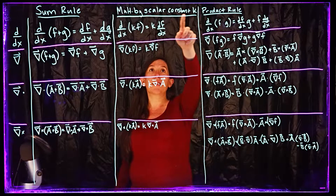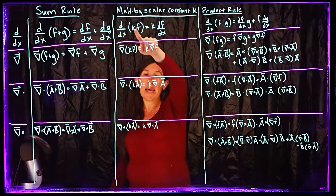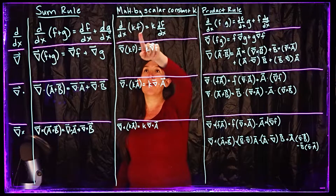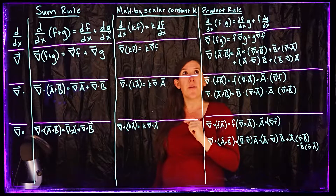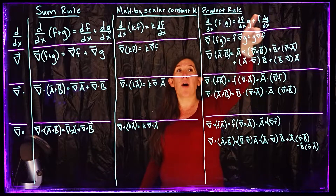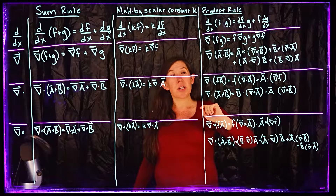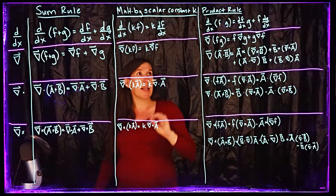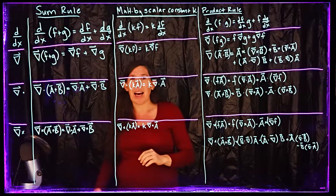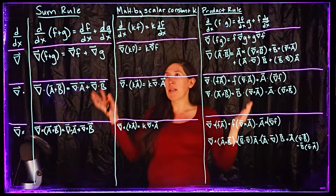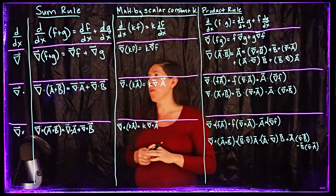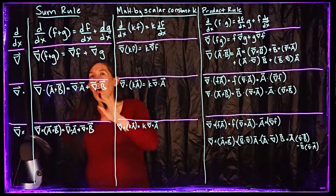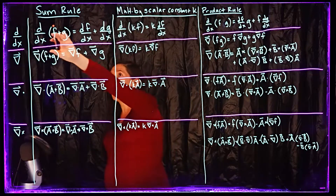If we have some scalar constant k — so k is not a function of x — and we take a derivative of that constant times our function, then that constant pulls out in front. And then we have the product rule where f and g are both functions of x. At any time I highly encourage you to pause the video if you want to write these down. All of these are also available on the internet and in various textbooks.